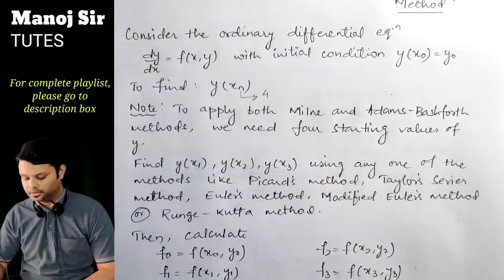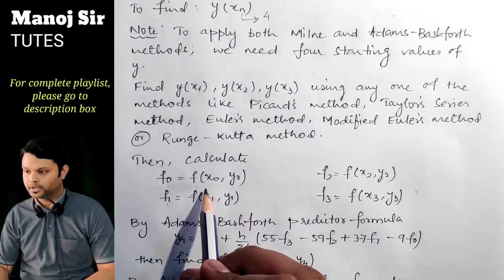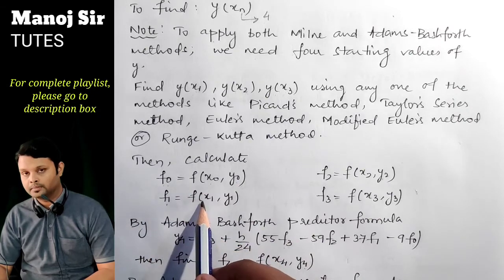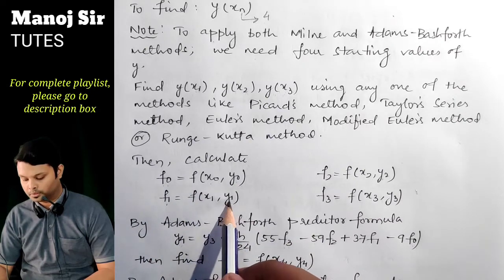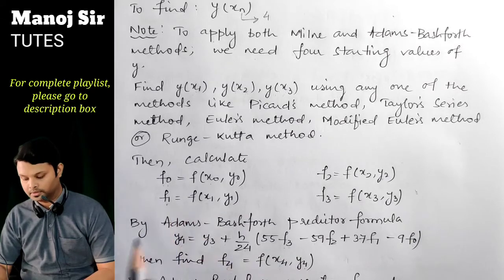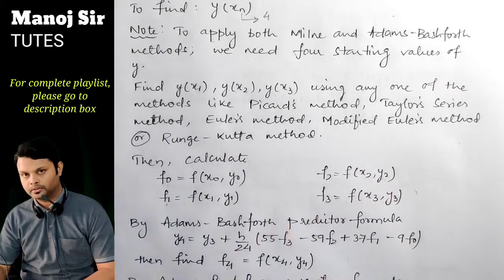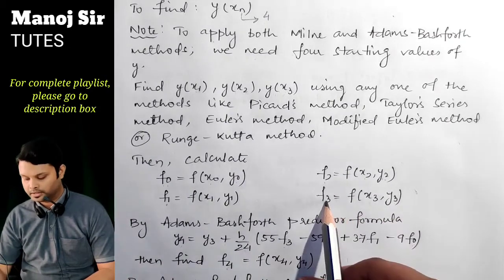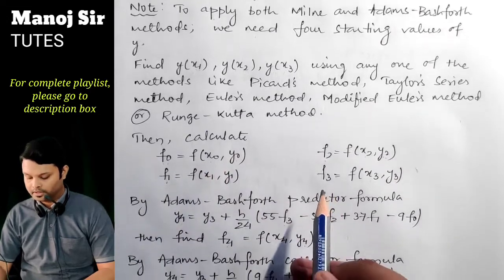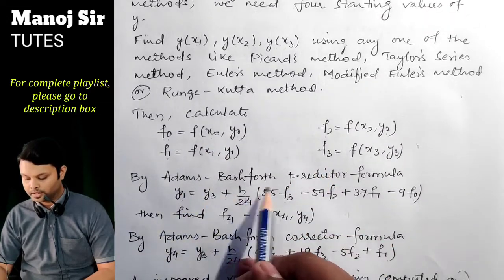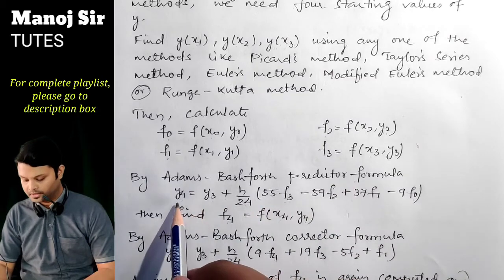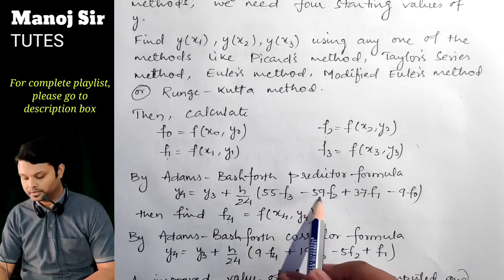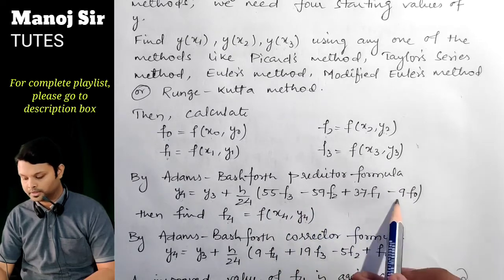We have the function f(x, y). Put x₀ and y₀ to get f₀; put x₁ and y₁ to get f₁; put x₂ and y₂ to get f₂; put x₃ and y₃ to get f₃. After finding these values, apply the Adams-Bashforth predictor formula: y₄ = y₃ + (h/24)(55f₃ − 59f₂ + 37f₁ − 9f₀).